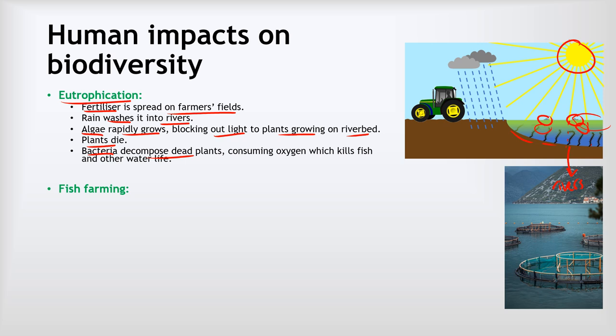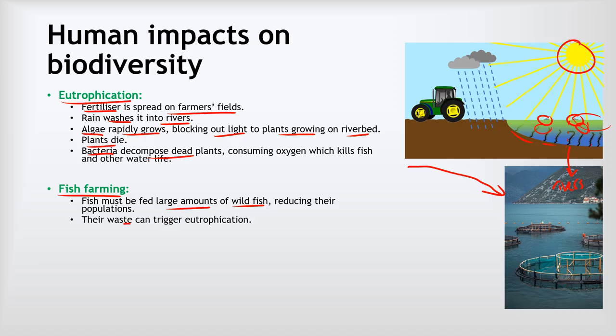Another harmful impact on biodiversity can be caused by fish farming. Fish farming is where we grow fish in giant floating nets, often close to the shore or in big lakes, rather than catching fish from the wild. The problem with fish farming is that the fish must be fed large amounts of wild fish as food, which can reduce wild fish populations. The amount of waste they produce can trigger eutrophication because the waste acts a bit like fertilizer, causing lots of algae to grow, and that can really harm the surrounding habitats. Finally, because there are large numbers of fish concentrated in one place, it makes disease more likely, and those diseases can often spread to wild populations of fish as well.